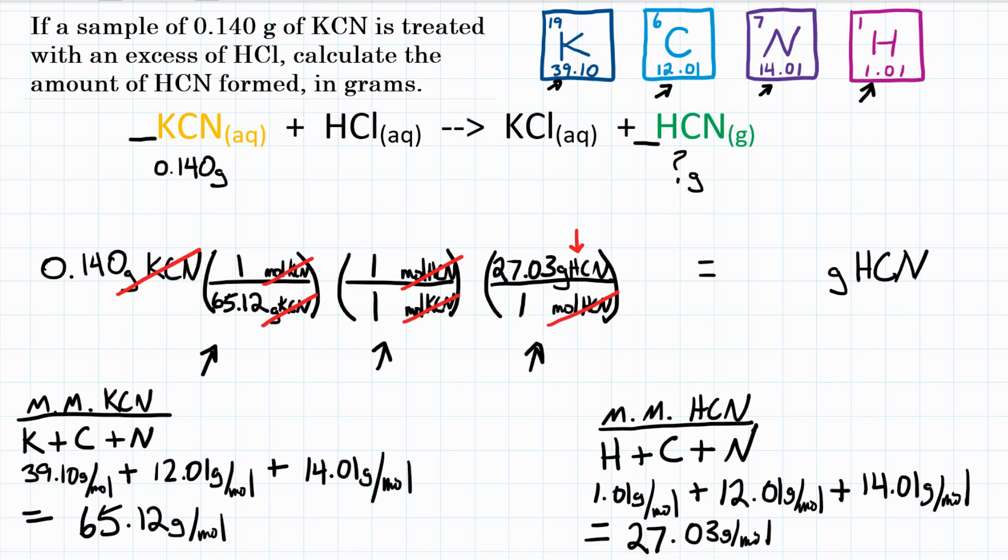Now let's do the math. What are we going to plug into our calculator? We're going to put 0.140 times the top of the first conversion factor, which is 1, so we can skip that, divided by the bottom. We'll do divided by 65.12. The second conversion factor, the top is 1, and the bottom is 1, so we're just going to ignore the math there, because it's not going to change our value. We just needed it to convert our units.